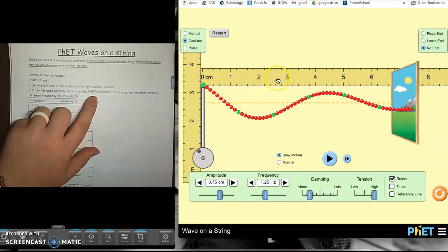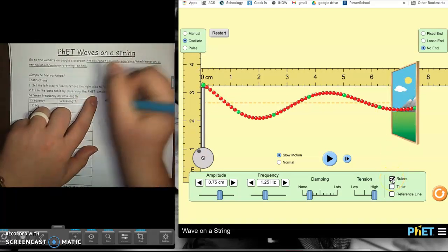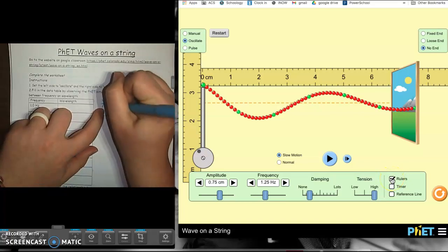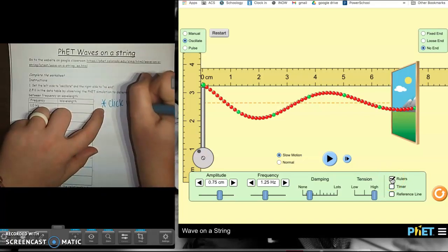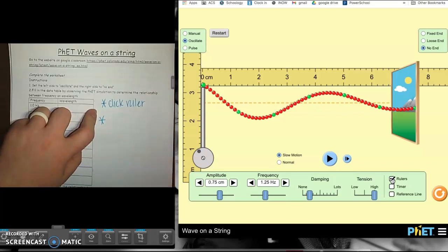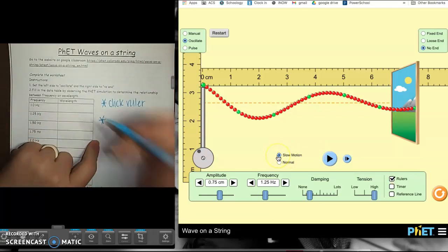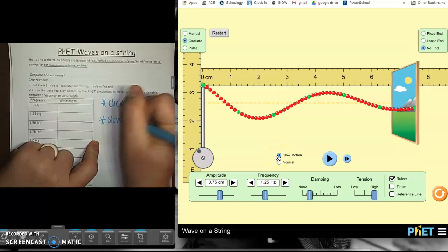Now another thing I need you to do is click the ruler because you will need a ruler. So also click ruler. And then I also need you to click slow motion because it makes it so much easier to measure.